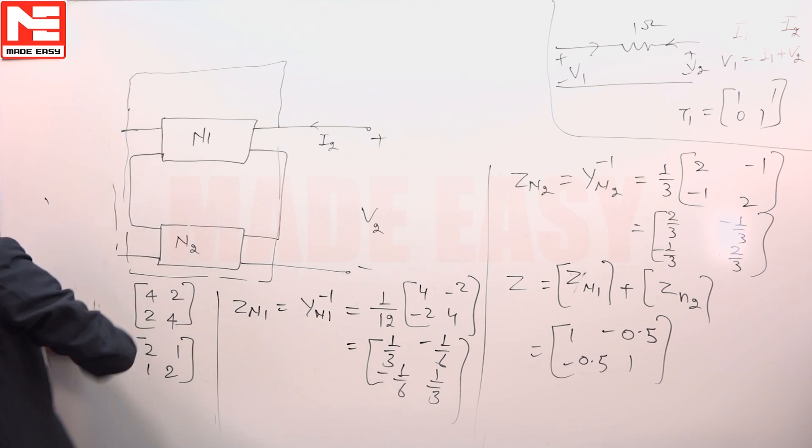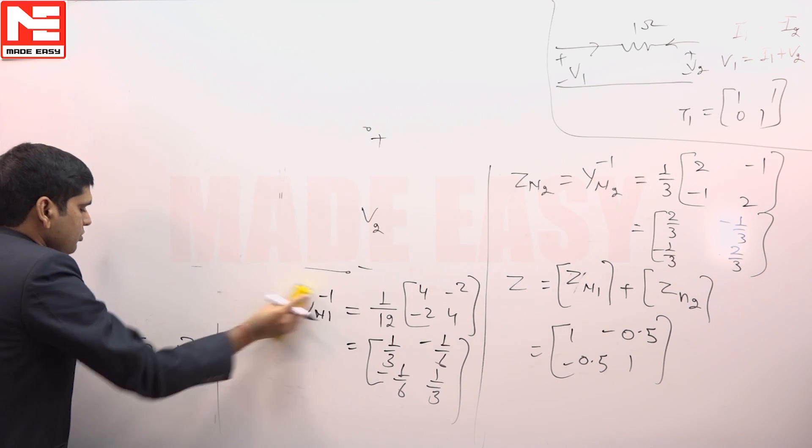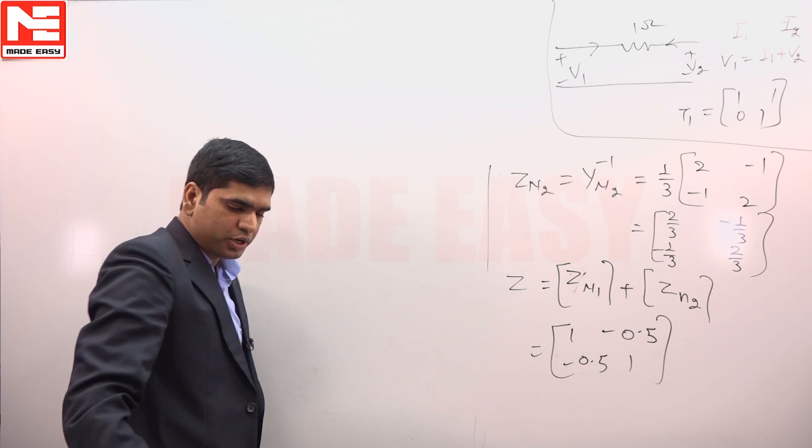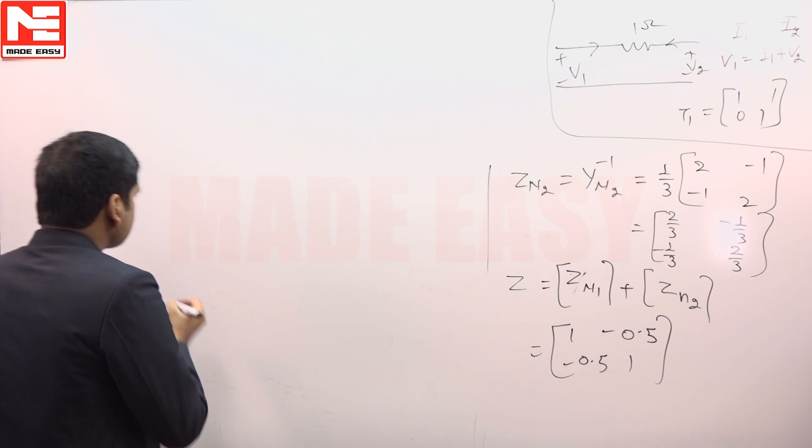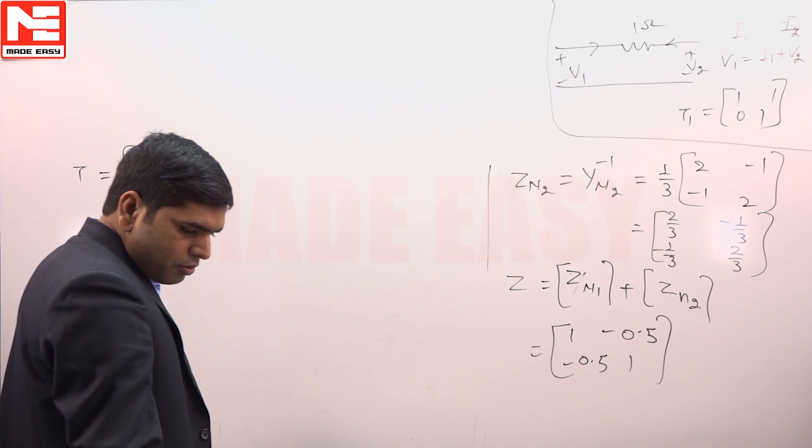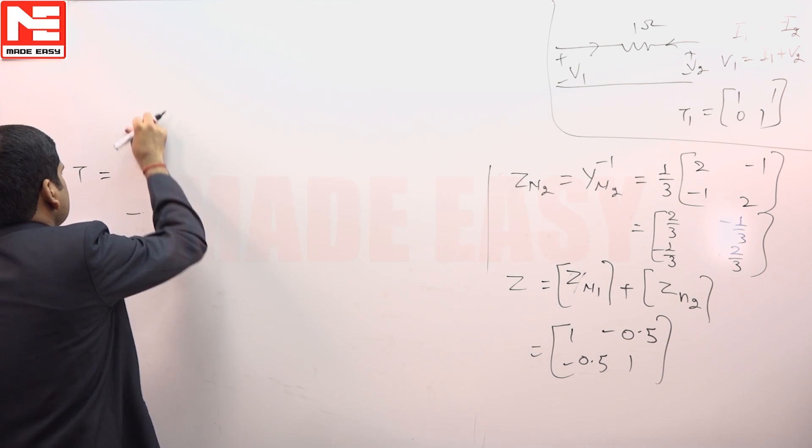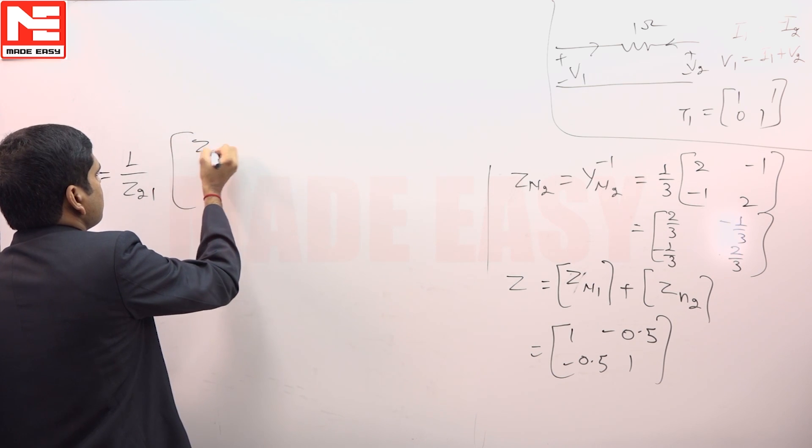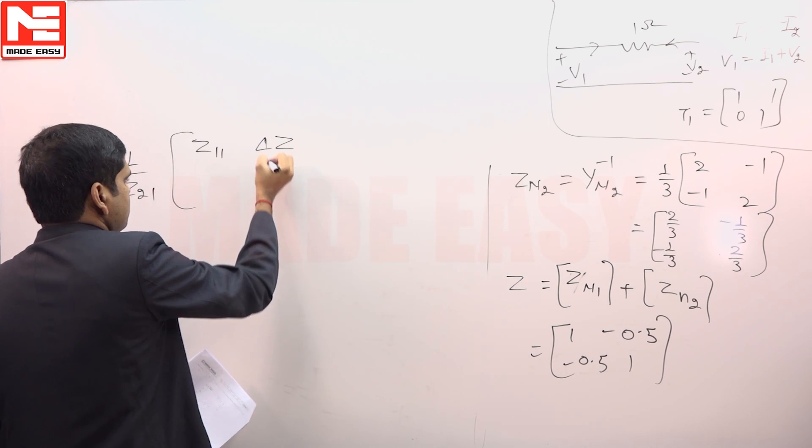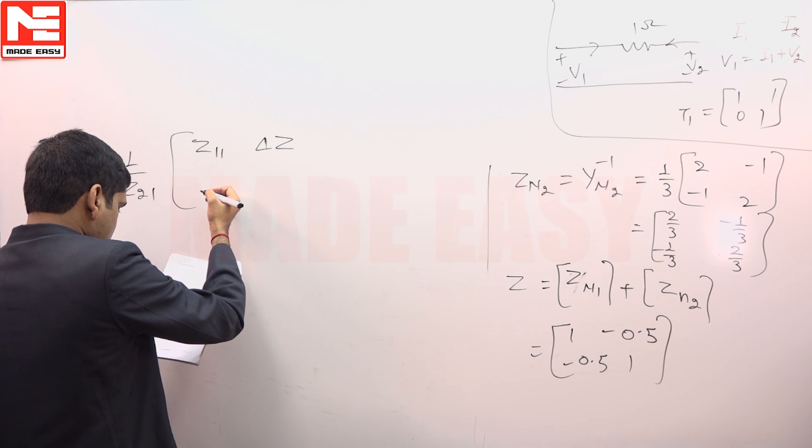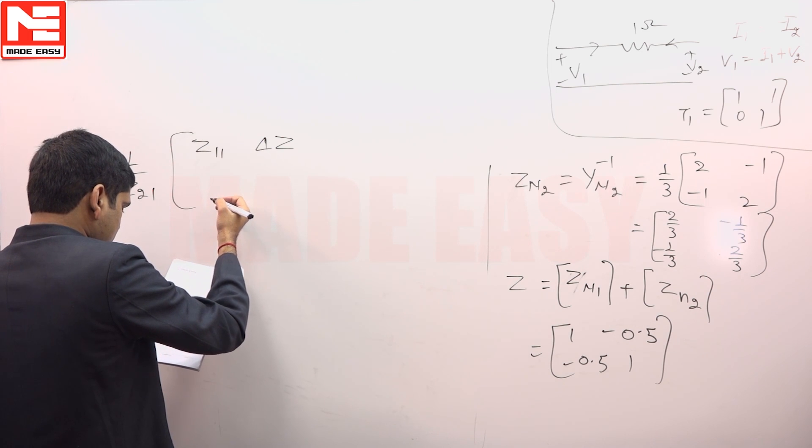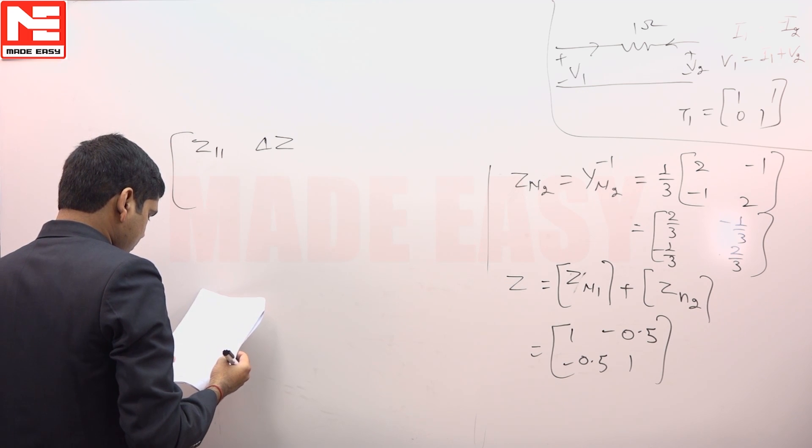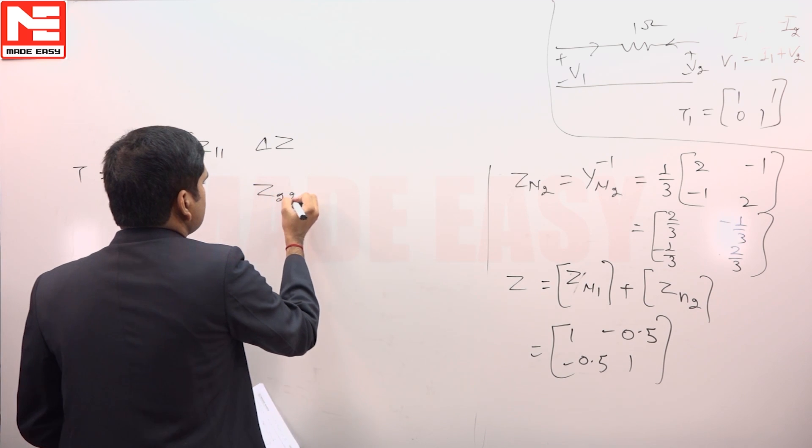Now, Z parameter need to be converted to T parameter, then only both of them can be cascaded and equivalent can be calculated by the product of the T parameters. So, to convert to T parameter, T is equal to 1 upon Z21, this is 1 upon Z21 divided into Z11 delta Z and this is again Z11 delta Z and 1 Z22.